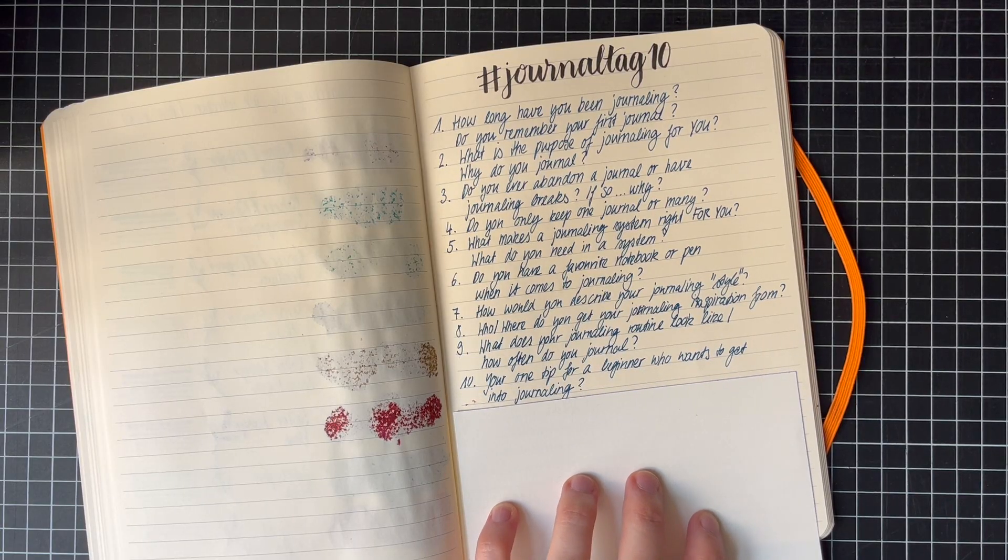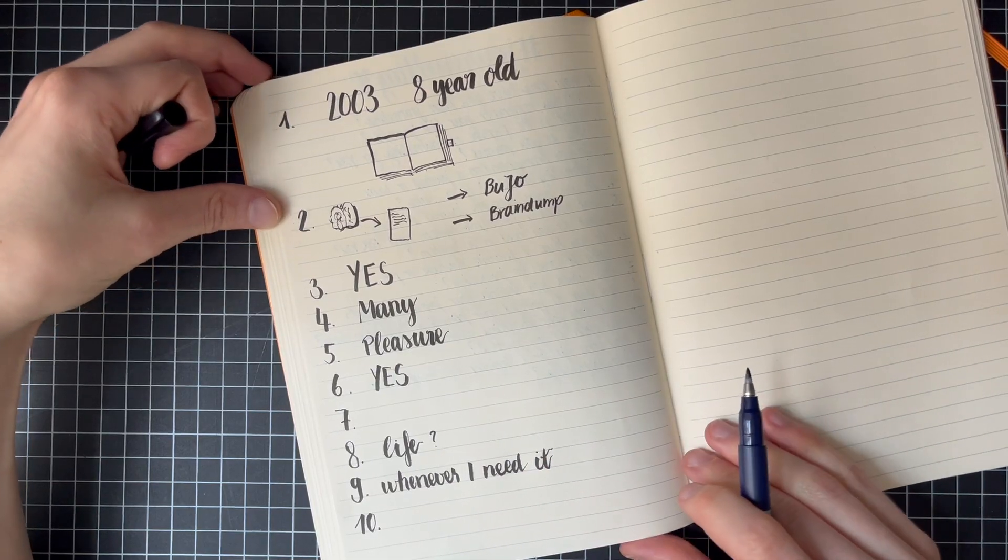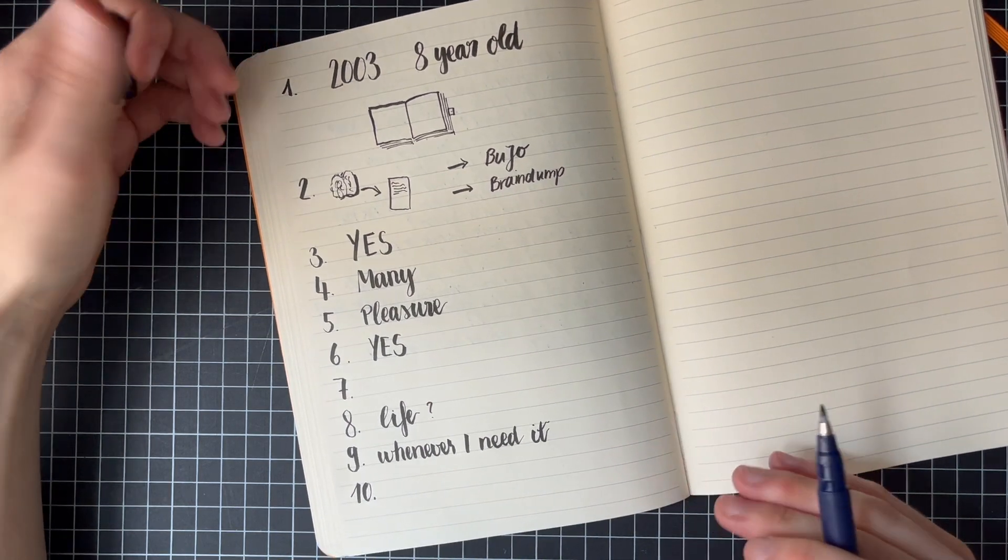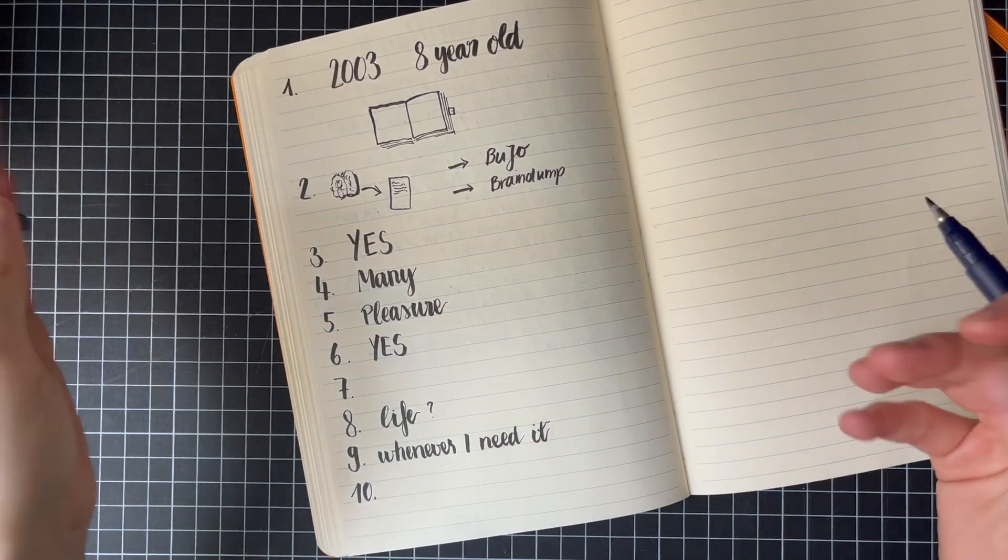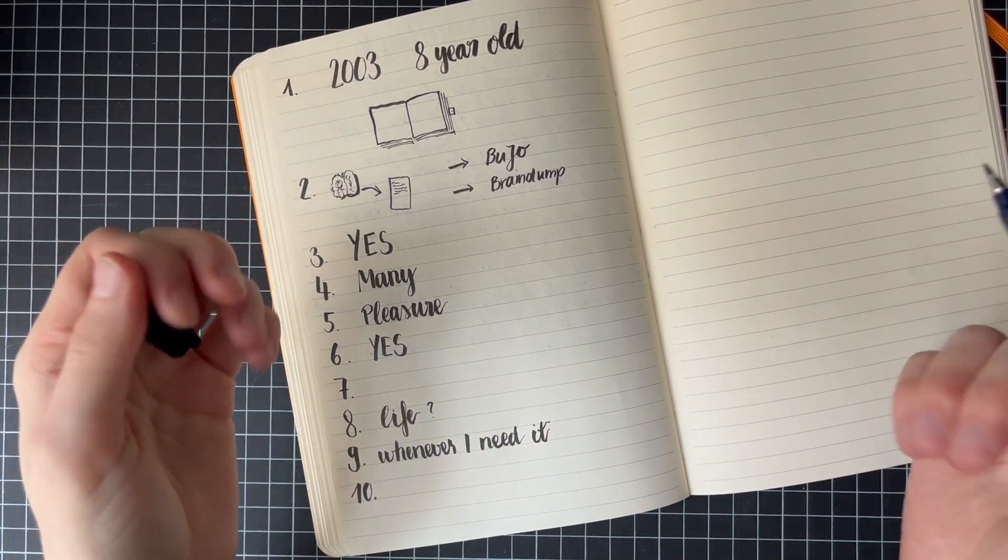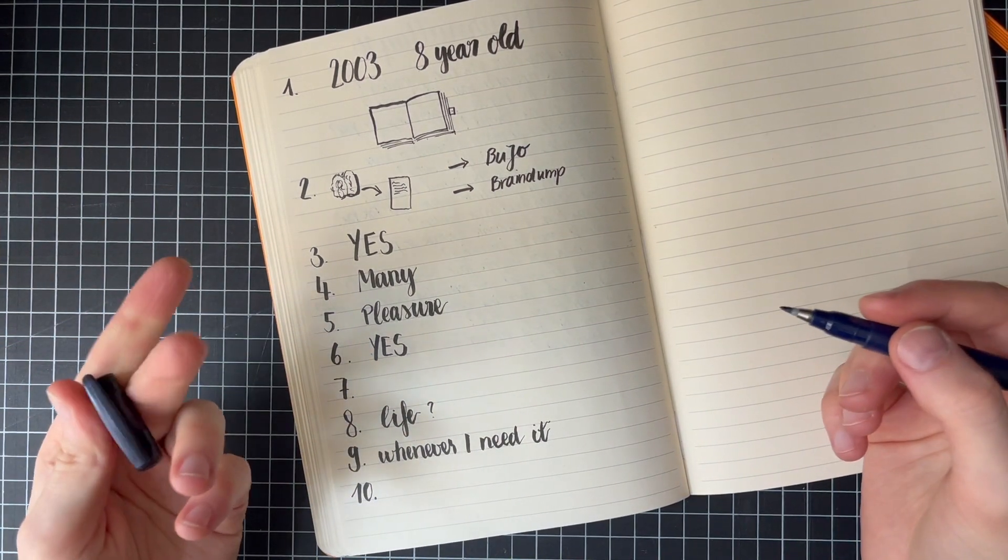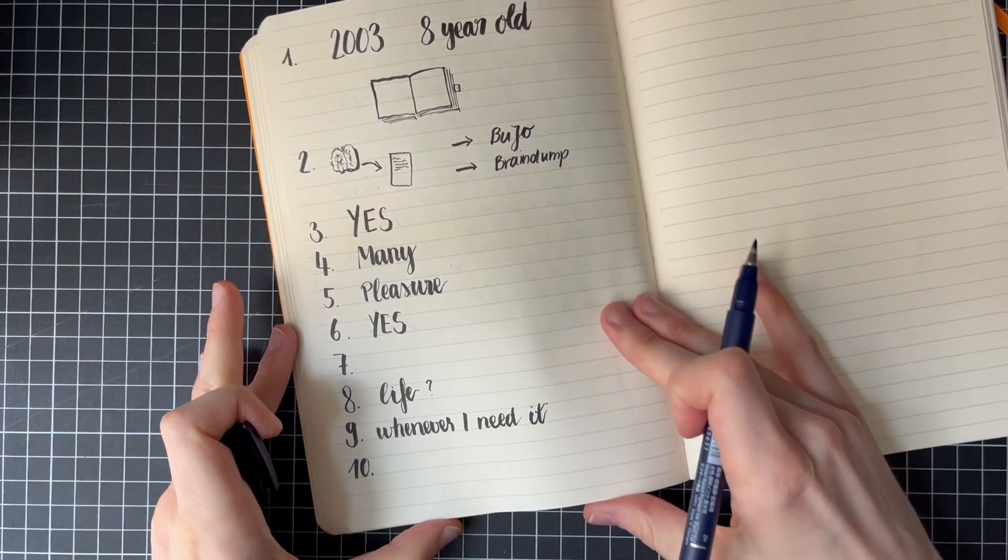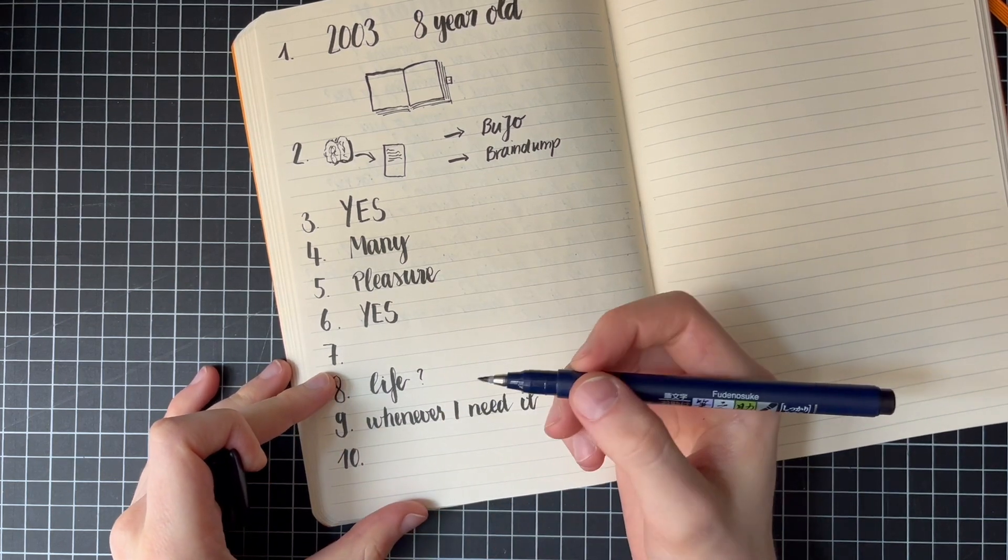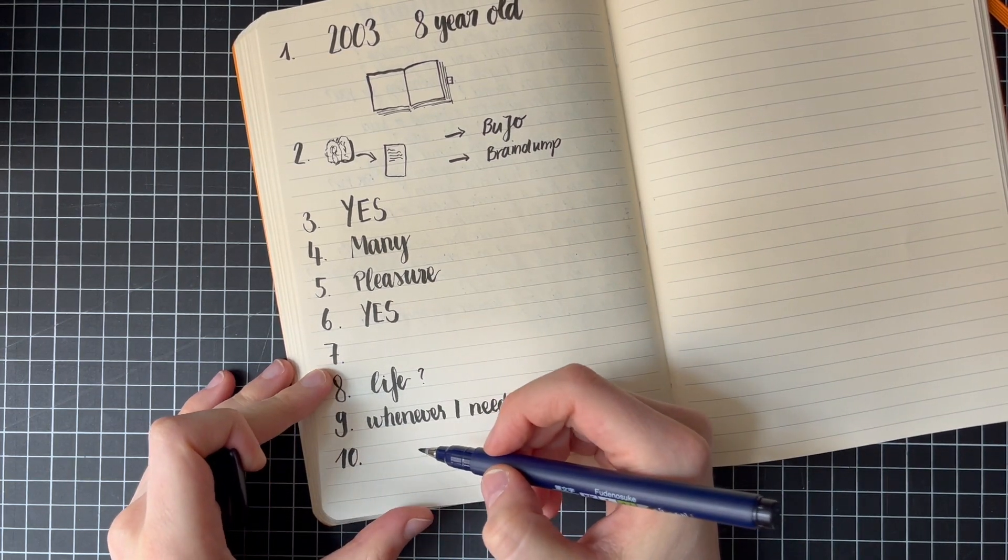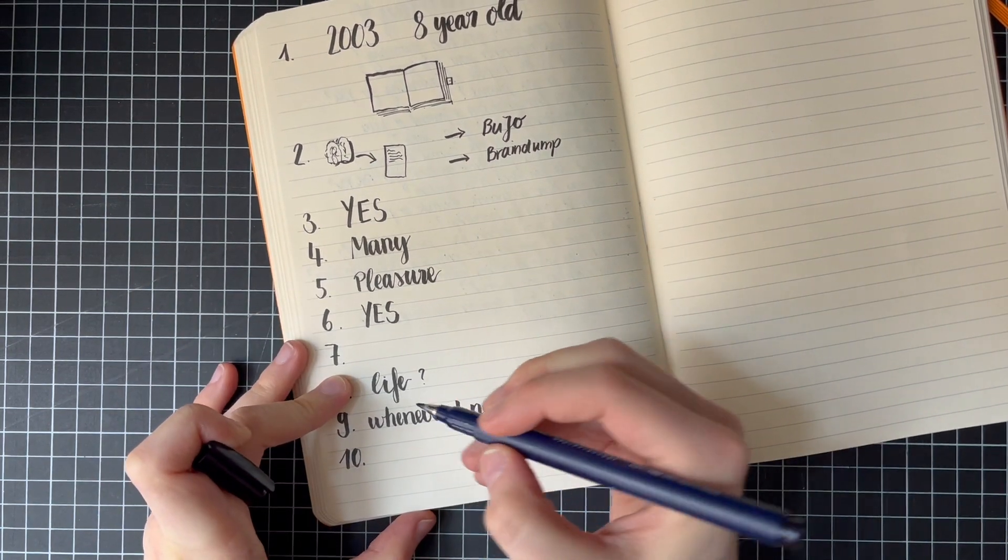Your one tip for a beginner who wants to get into journaling. My number one tip for a new journaling person, for a person who wants to journal, who wants to start tomorrow, or today, or next year, or whatever. First, just start, just try it out. But second, and I think that's even more important so that it can stick, is asking yourself why. Why do you want to journal? Is it a real reason? Be honest with yourself. Is it a real reason?